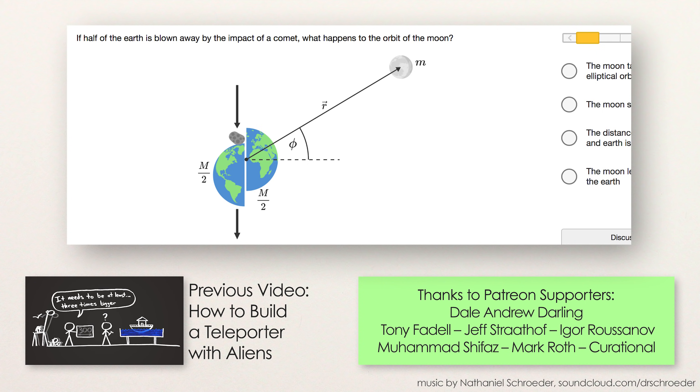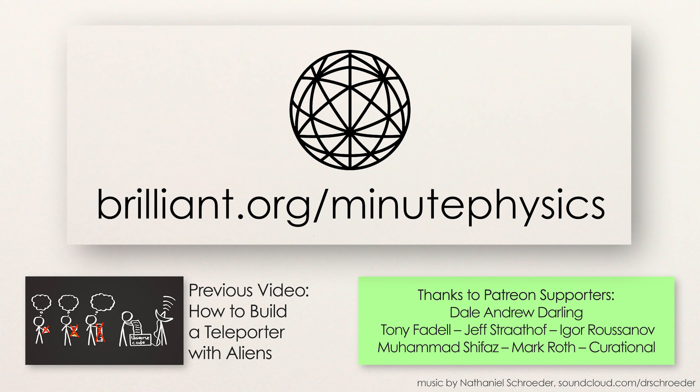For example, if half the Earth is blown away by the impact of a comet, what happens to the orbit of the moon? It almost sounds like a Minute Physics video, but you're going to have to go to Brilliant.org to solve it, or one of their many other problems. And when you do, please use the URL Brilliant.org slash MinutePhysics to let Brilliant know you came from here.